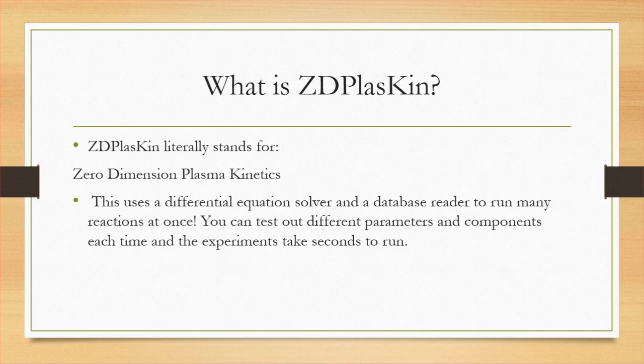So first, what is ZD Plaskin? The ZD Plaskin software stands for Zero Dimension Plasma Kinetics. This is a software that uses a differential equation solver and a database reader to run many reactions at once and predict behavior based on set parameters. You have the ability to write your own reactions and modify them piece by piece, and each test runs fast — you can get an output within a matter of seconds. That doesn't mean it's easy work, however, because writing the code and creating your experiment will take up the majority of your time and effort.